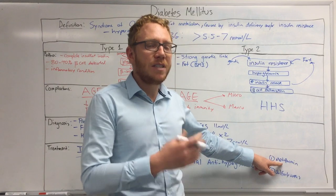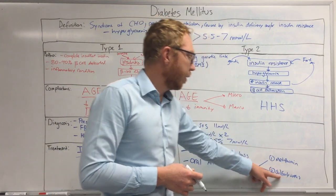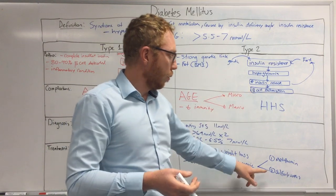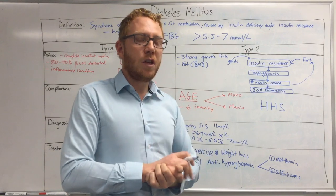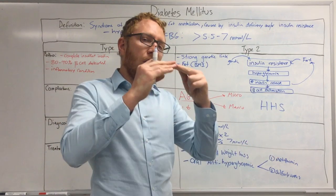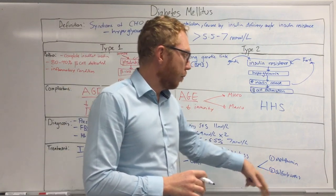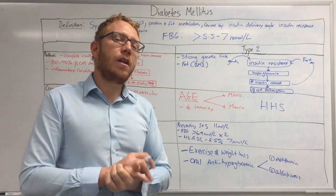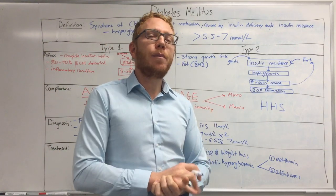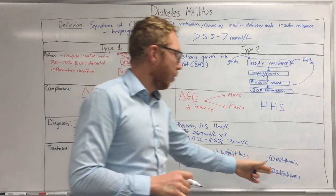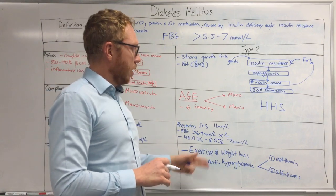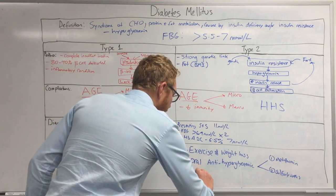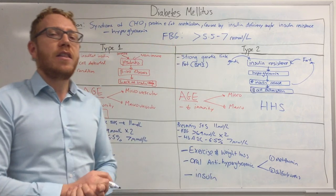If metformin is insufficient, sulfonylureas can be added. Sulfonylureas work by stimulating insulin release from beta cells, thereby lowering blood sugar. However, because they increase insulin, they can cause weight gain and carry a risk of hypoglycemia. If even combination oral therapy still leaves the patient with hyperglycemia after two or more drugs, insulin is added as the final treatment modality.